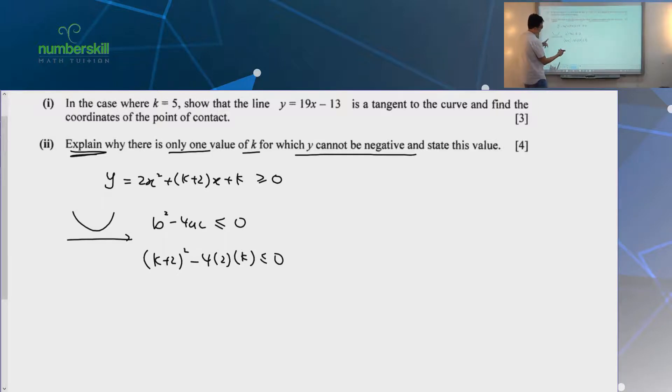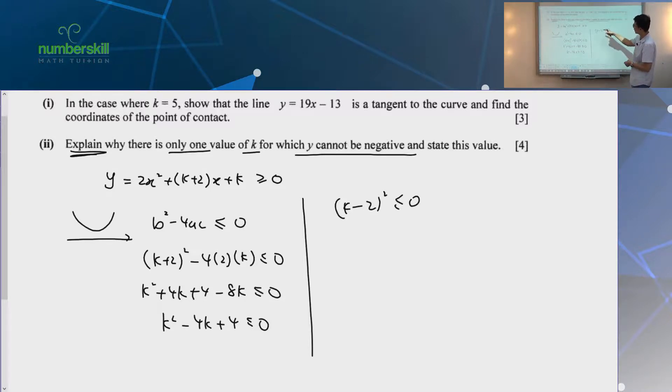And then now this is an inequality that you can solve. Minus 4K plus 4 less than zero. So, 4K plus 4. That's like a very nice number, right? 2. So, it's K minus 2 square, less than equal to zero. Now, most of you know what to do for this, which is good. I cannot explain why there's only one value. So, we have an inequality that looks a bit like this. B squared minus 4AC less than or equal to zero. Then you end up with this. How do you solve this?